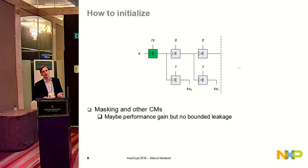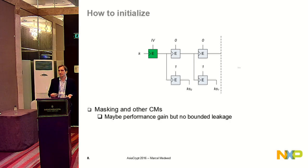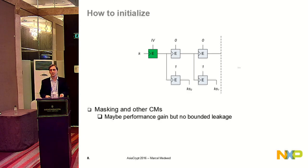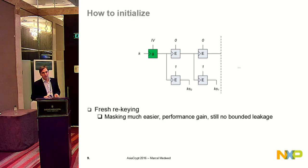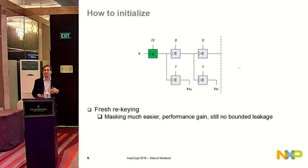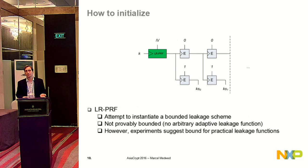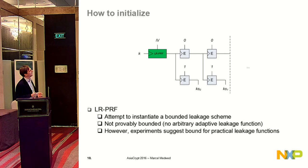In proofs you often need a leak-free gadget to initialize first. One thing you could do is use a highly protected implementation like masking. Overall you might get better performance than always using a masked implementation, but you still have no bounded leakage. You can improve performance using re-keying, where a special dedicated linear function is used for the seed update — so masking has only linear costs and you can mask to higher orders. But still you have no bounded leakage. That's one of the motivations for instantiating a leakage resilient PRF, which would allow initialization with bounded leakage. In this work we attempt such a construction.